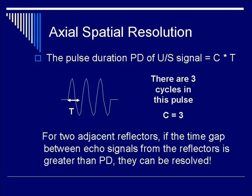Here is a cartoon of a pulse with a signal of three cycles, period of t. So pulse duration is c times t. If the time gap between echo signals of the reflectors is greater than the pulse duration, then they can be resolved.